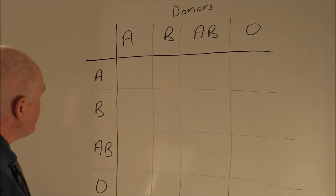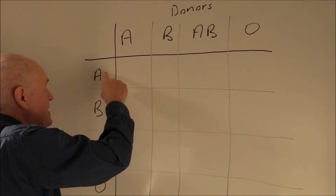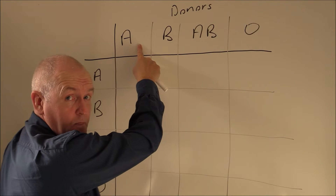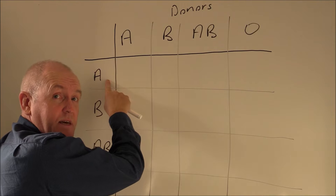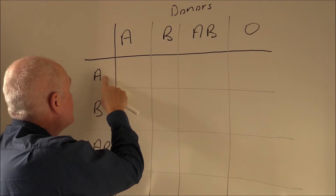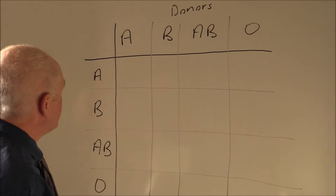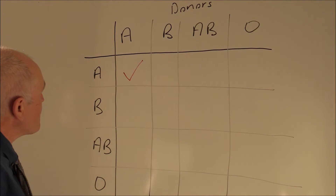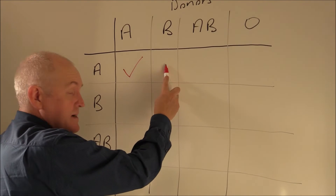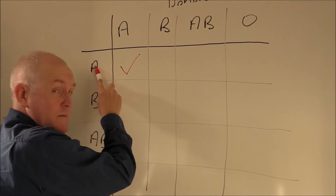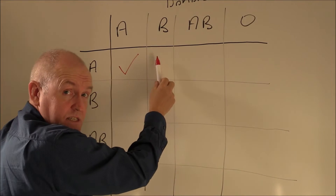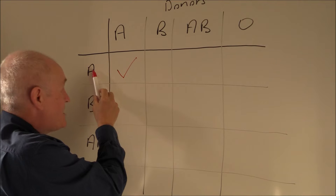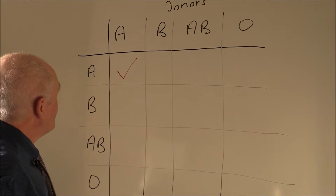Let's imagine the situation where group A is giving to group A. This person is going to be giving A antigens, but in the plasma of the A recipient there are not going to be any A antibodies to agglutinate the donated red cells — therefore that is going to be acceptable, just thinking about the ABO system. Now if someone is blood group B and they try to give to someone who is blood group A, then the B antigens in the donated red cells will be agglutinated by the anti-B antibodies present in the group A blood plasma.